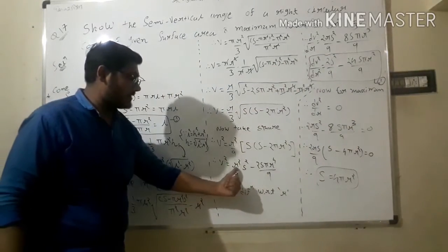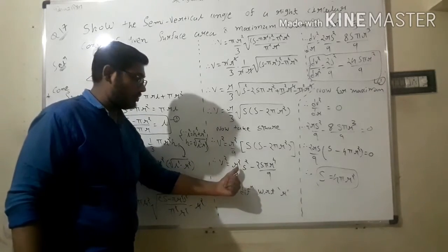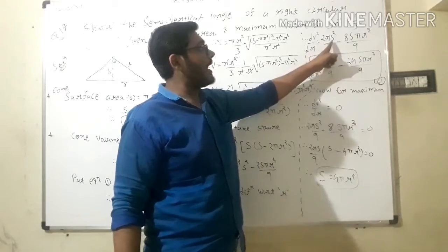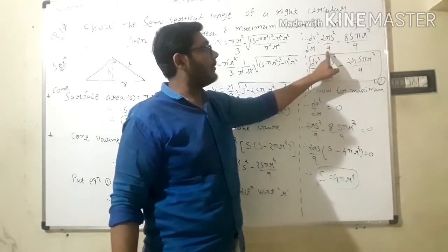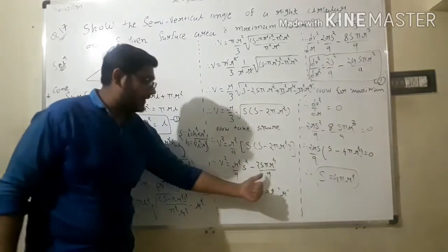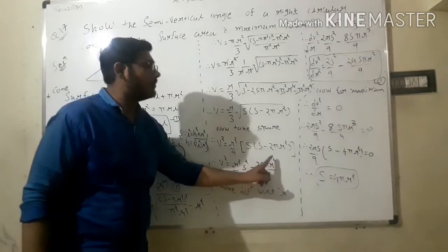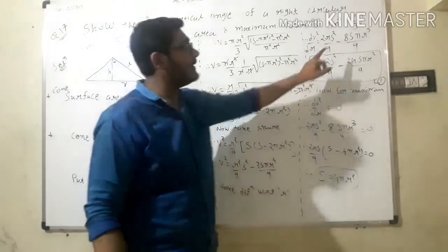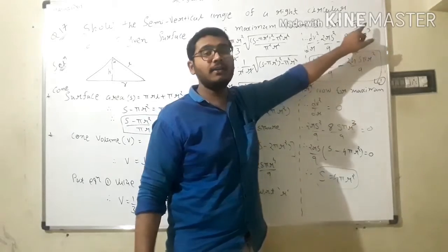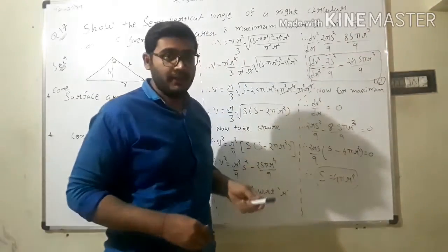Differentiating r² with respect to r gives 2r, so the first term gives 2Sr/9 · something. The second term: differentiating r⁴ gives 4r³, so 4×2 = 8. Therefore dV²/dr = 2Sr²/9 (from first term) minus 8Sπr³/9.